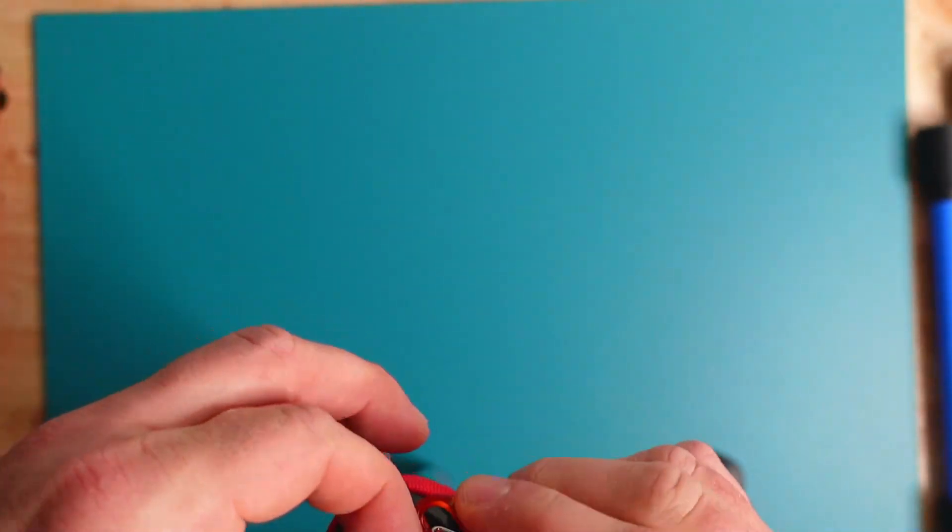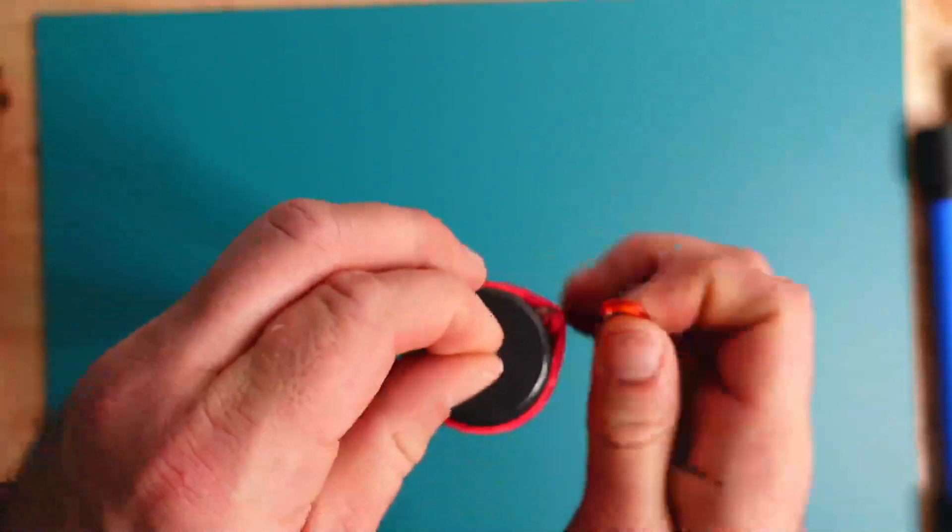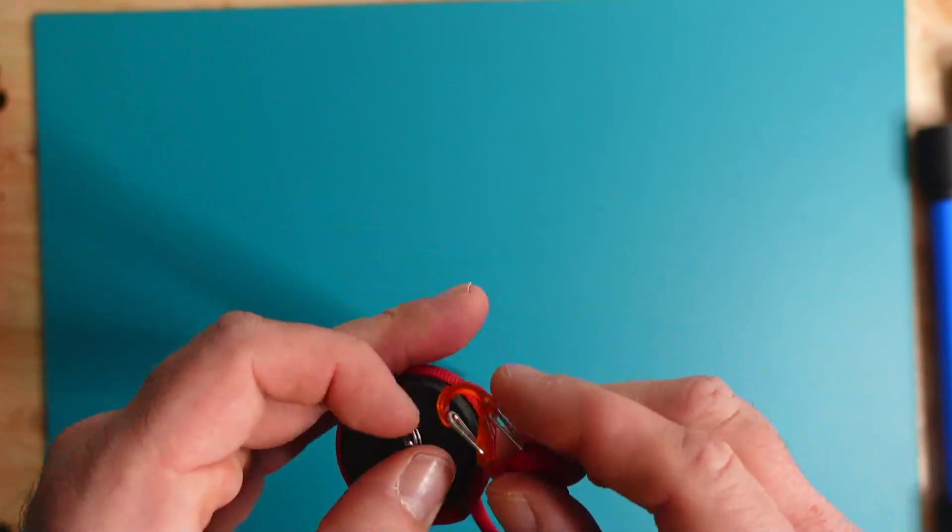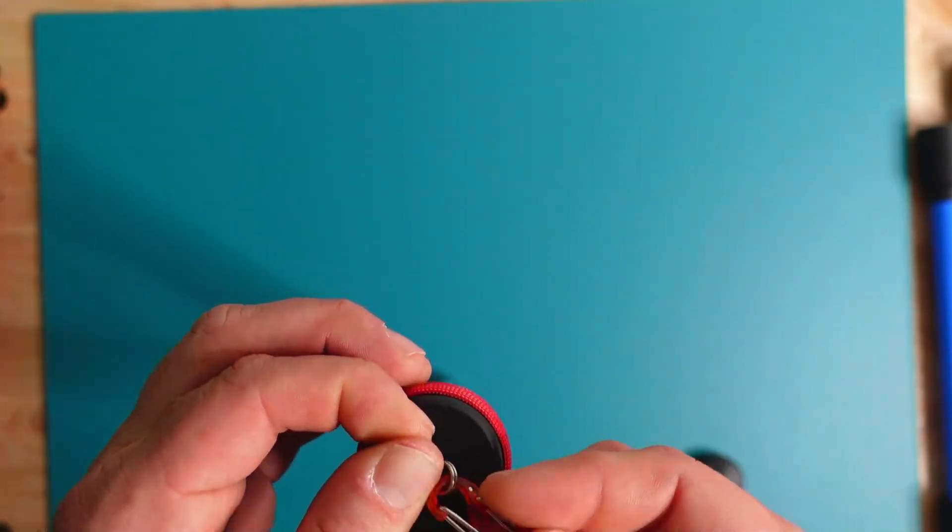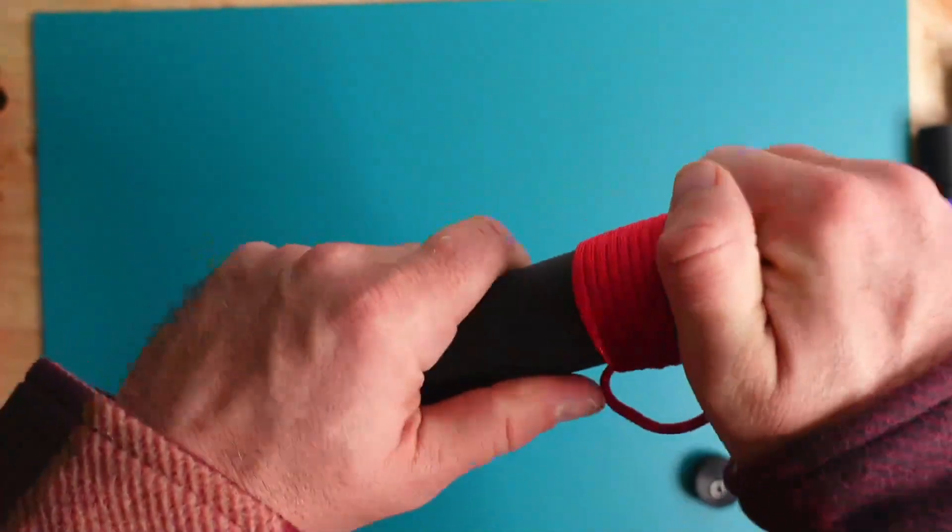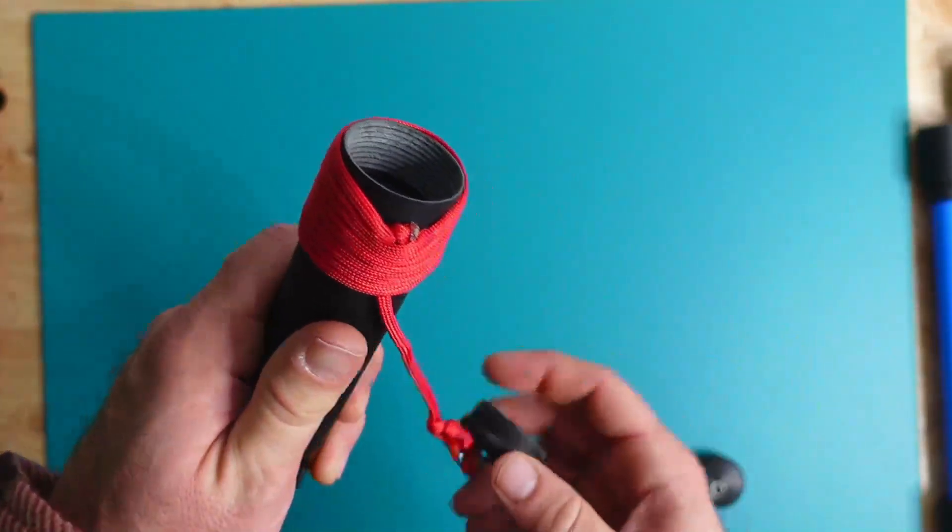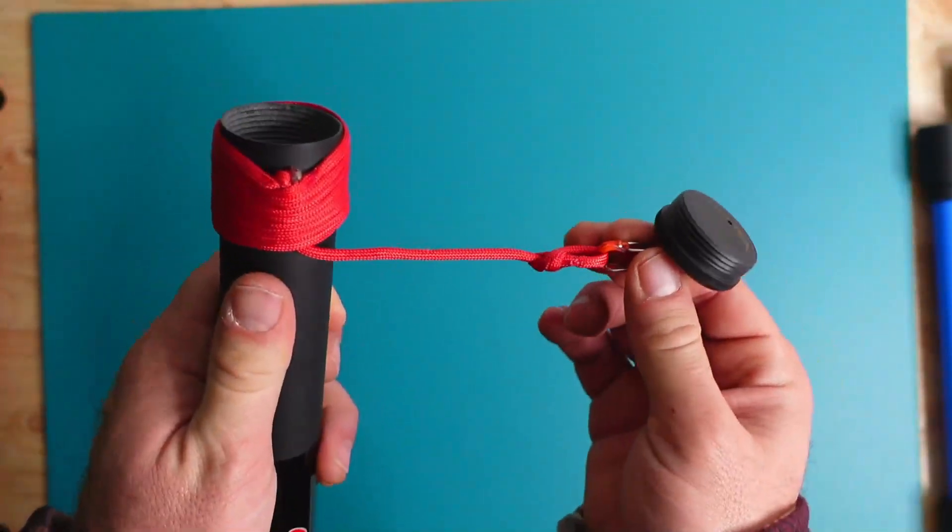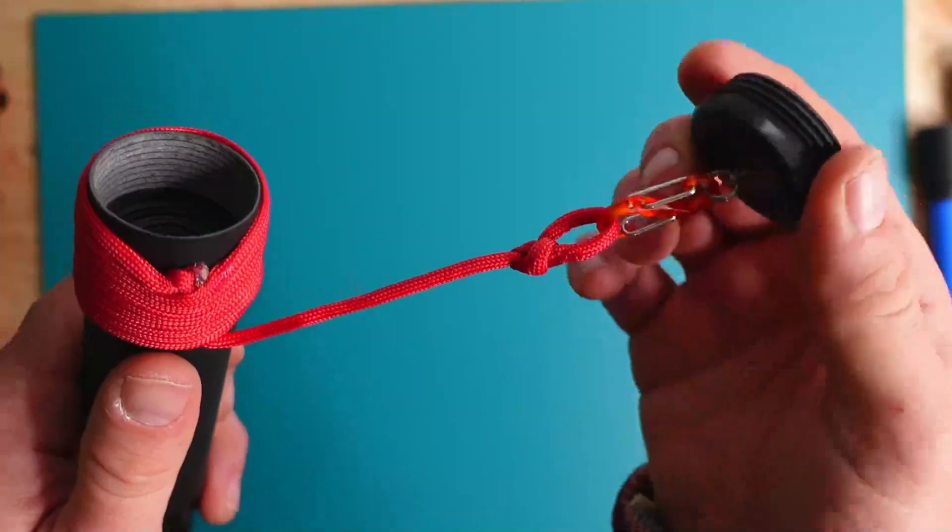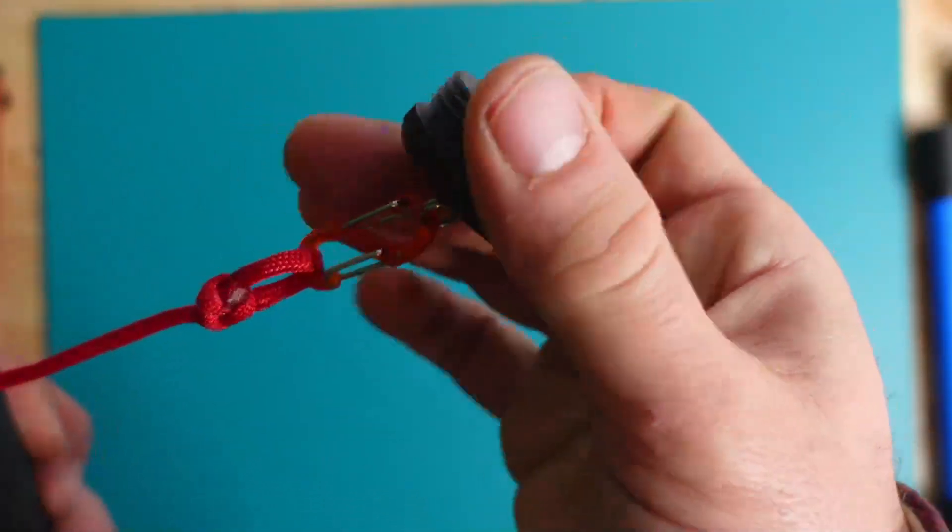Now, the thing about this, at least with my mast, is I'm capable of unscrewing this without having to take that part off. So now I'll never really actually lose that cap, especially if you have locking carabiners, just like I don't.